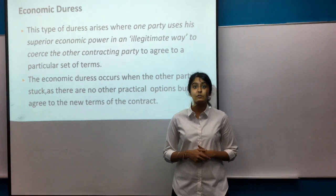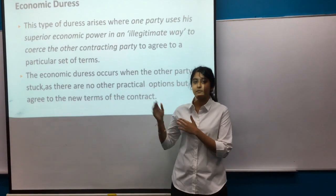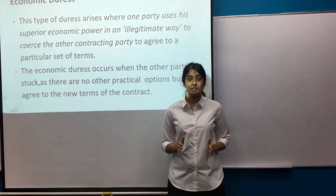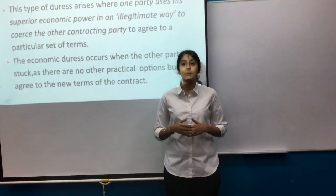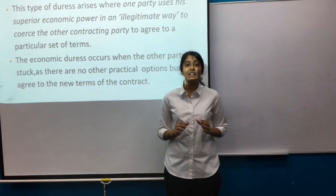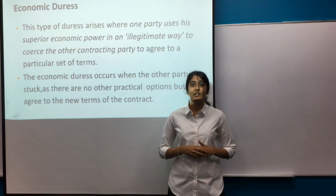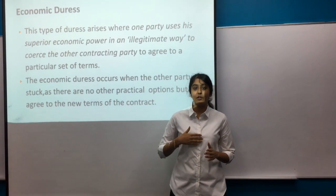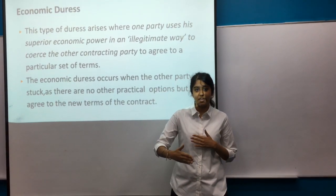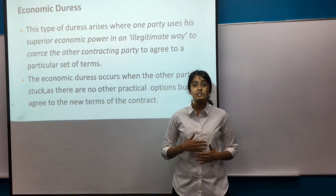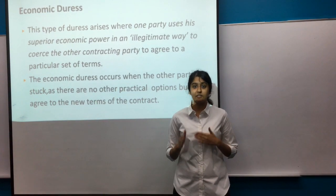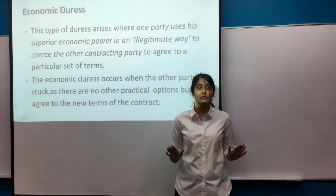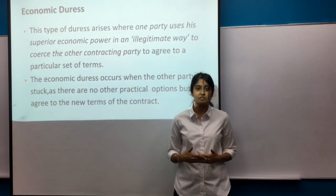The third type is economic duress. This type of duress arises where one party uses his superior economic power in an illegitimate way to coerce the other contracting party to agree to a particular set of terms. Economic duress occurs when the other party is left with no other practical options but to agree to the new terms of the contract as specified.